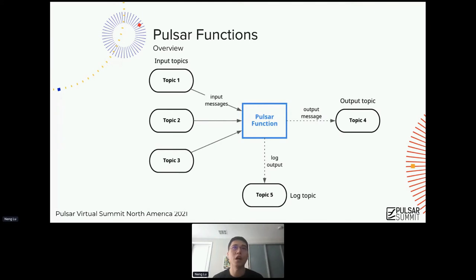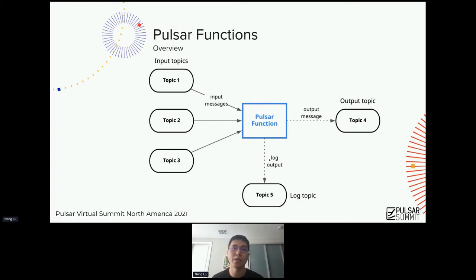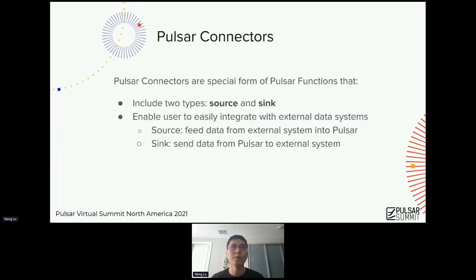With that said, we can look at how Pulsar functions fit into the architecture. A Pulsar function can consume messages from multiple topics, apply user logic, and then generate an output message to another output topic. Also, during running, to increase visibility, we provide a log topic so the Pulsar function can send its internal logs into another Pulsar topic for you to observe or monitor what's happening inside the functions. It's actually quite flexible — a function is not necessarily required to consume from topics and send data to topics.